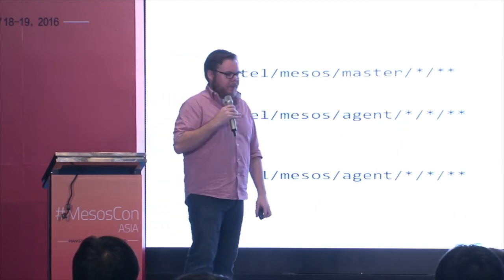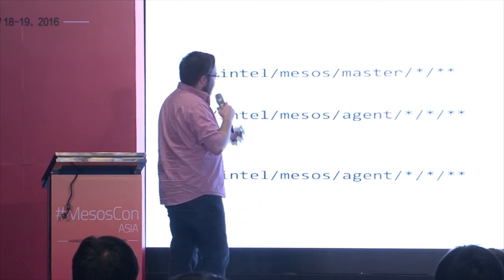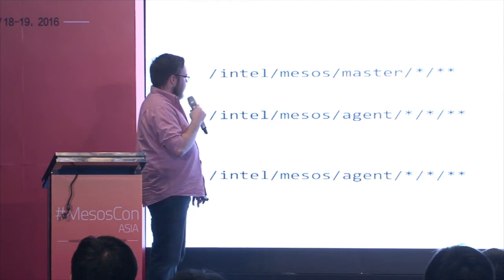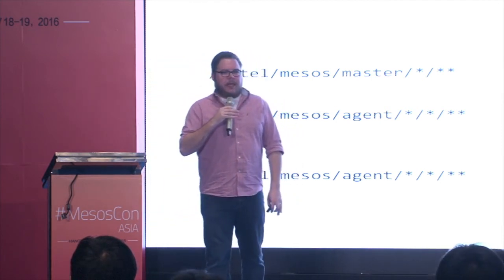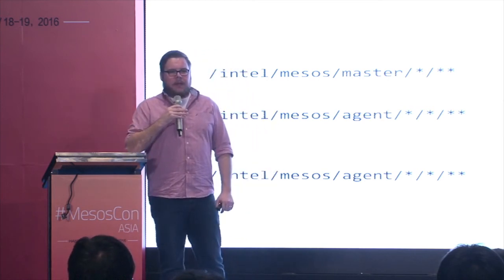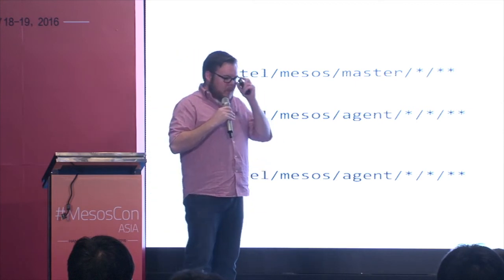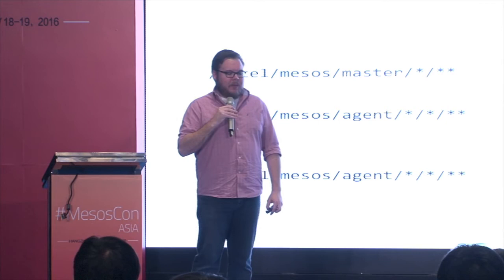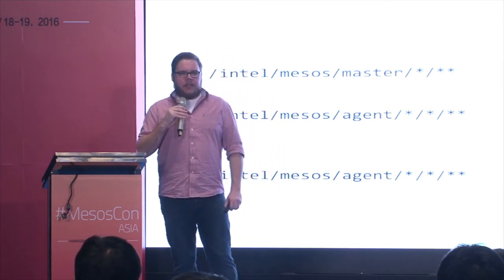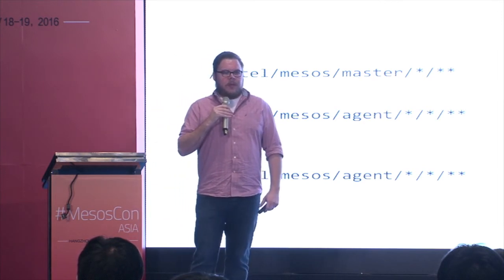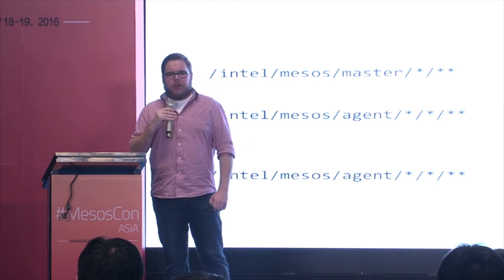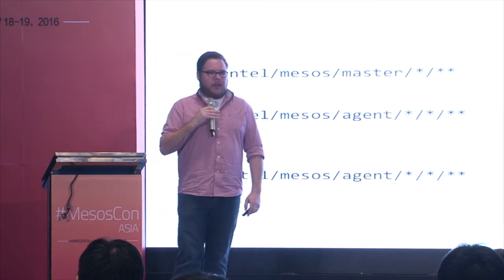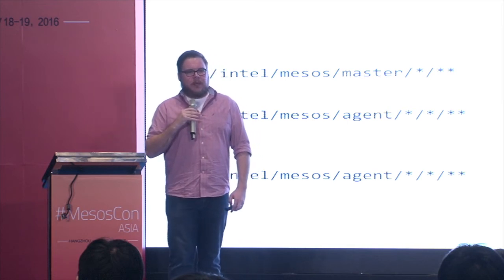In the Mesos plugin, there are master and agent namespaces along with dynamic namespaces marked with asterisks. These dynamic namespaces are filled in with framework IDs and executor IDs, so we can associate metrics with individual workloads. That way, you can determine how much memory or CPU Marathon is using versus Chronos versus Jenkins, and really get a good snapshot of what your cluster is doing and who's using it.